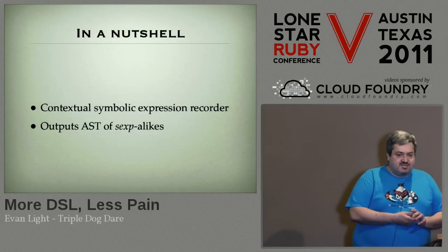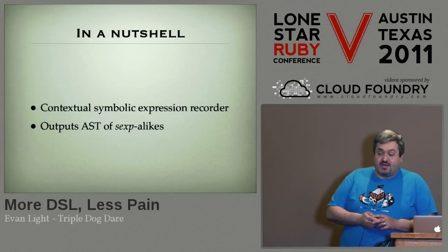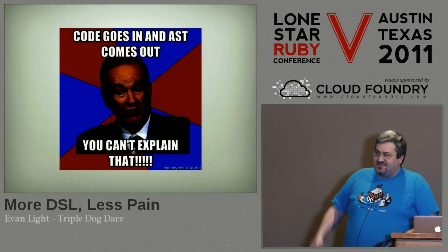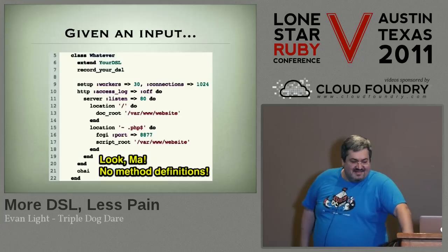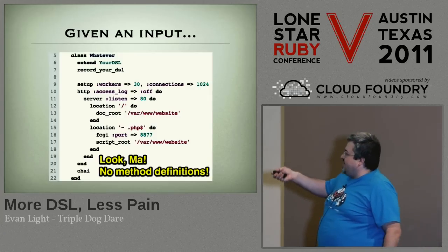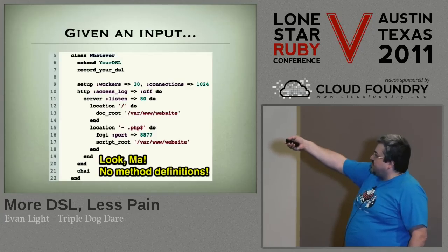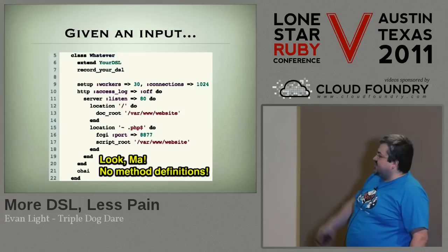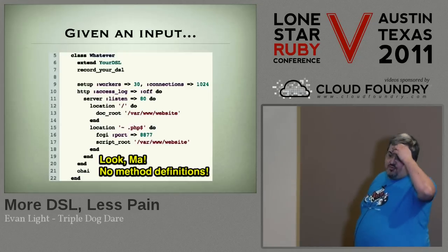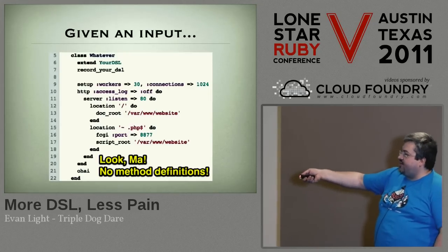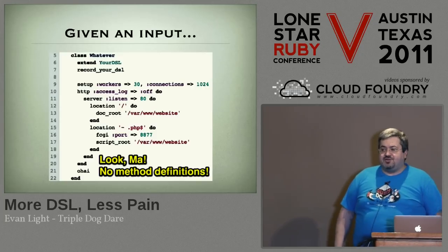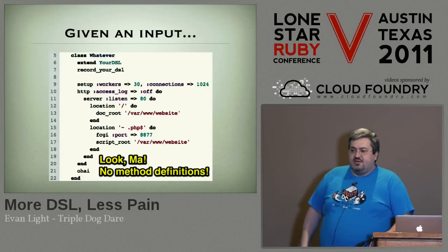In my case I used it to actually run the interpreter — code comes in and an AST comes out. Given the HTTP DSL I showed you earlier, with just a couple of extra lines — extend YourDSL, record YourDSL — and forgetting the method declarations in the whatever class, this will still actually run without generating any errors, even without any implementation. You just have an AST sitting there waiting for you to do something with it. That can be handy.